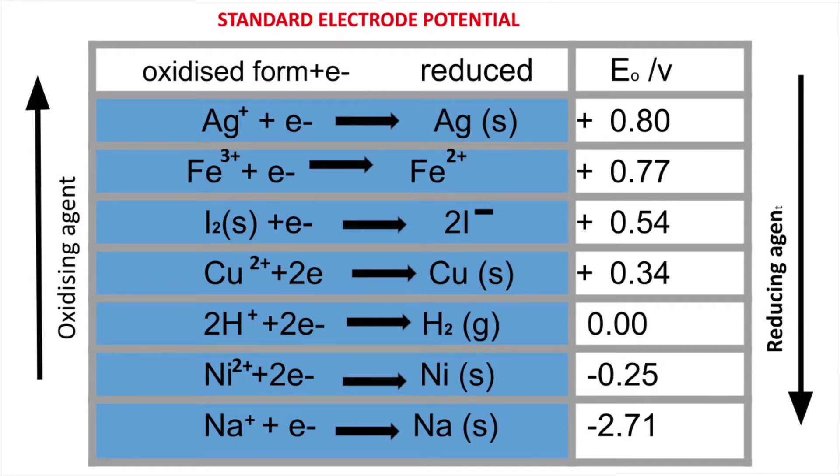You can see that in the electrode reduction potential chart. It is always given in the element from oxidized form to reduced form. We can see that some electrode potentials are positive and some may be negative.